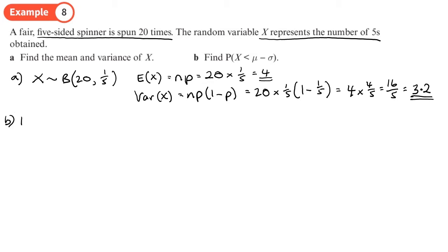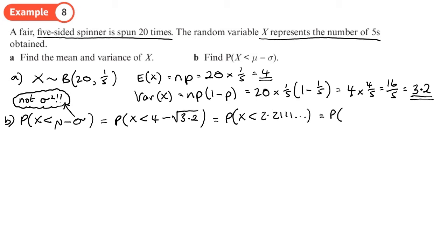Part B, find the probability that X is less than the mean minus the standard deviation. So be careful here. It's not the standard deviation here. So it's not the variance. So make sure you square root it. And because we're relying on an answer from part A, it's really important we get that part right. So let's substitute the numbers in. So the mean was 4. And the standard deviation is going to be the square root of 3.2. So don't put 3.2 there. You'll get it wrong. So it's a probability that X is less than which number does that become. Once we work that out. It's like 2.2111 like that. We need to turn it into a whole number. So it's less than or equal to 2. We're going above 2, but we haven't reached 3.